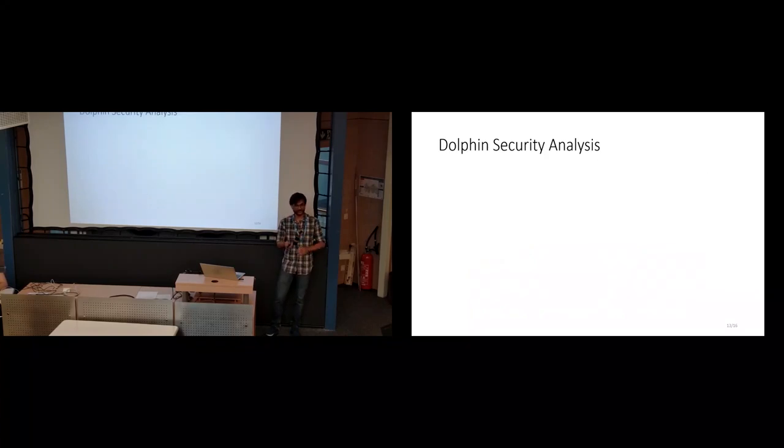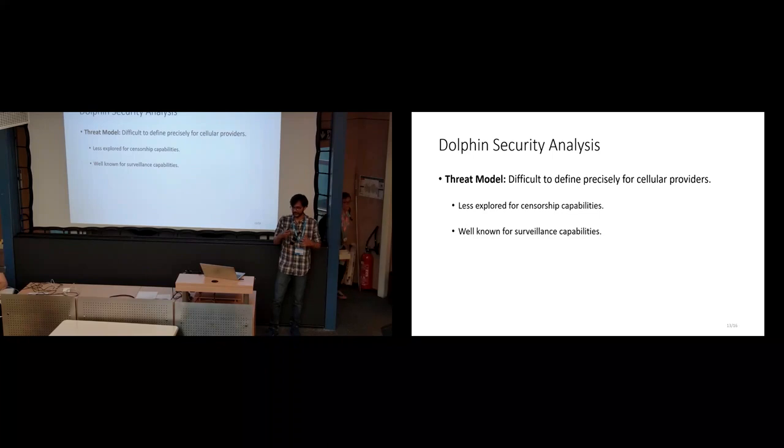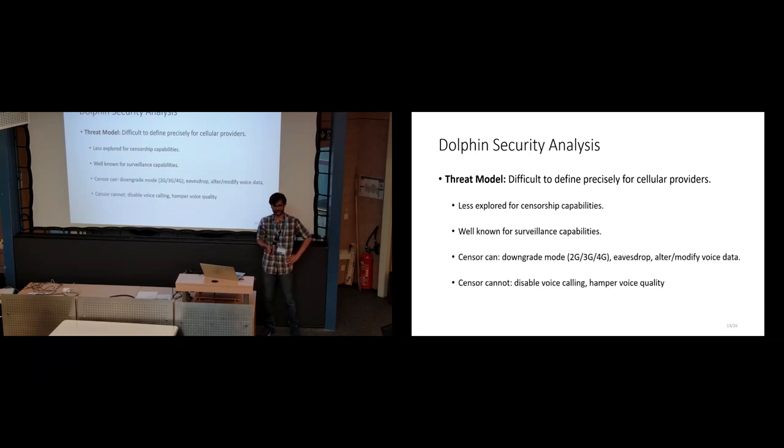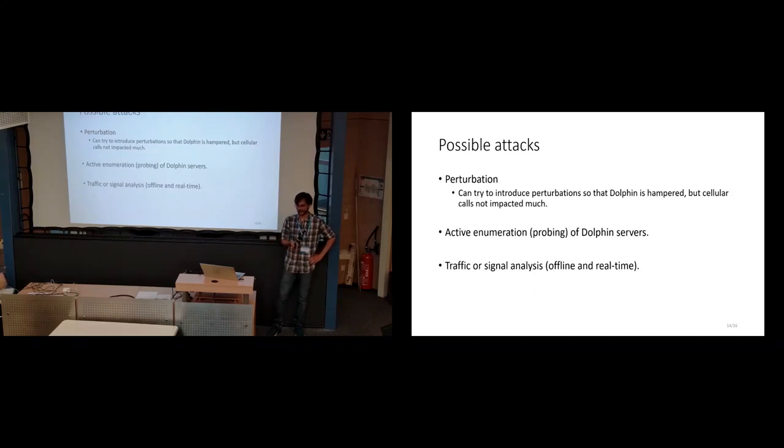This is all about the performance aspect. But then we also had the detectability aspect of Dolphin, for which we needed to form a security analysis. It was very hard for us to define a precise threat model for Dolphin, because cellular providers are not considered as adversaries generally. They are known for their surveillance capabilities, but we do not know how much censorship capabilities they have. We assume the censor can downgrade modes, eavesdrop, alter traffic. But it cannot disable the voice channel completely. That is outside our model for this consideration, or hamper the voice quality to the extent that it becomes unusable. With this, we check the feasibility of different types of attacks from perturbation to active enumeration to traffic or signal analysis.